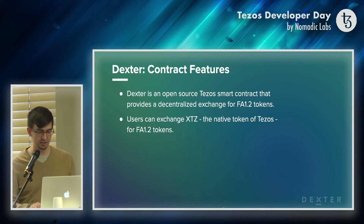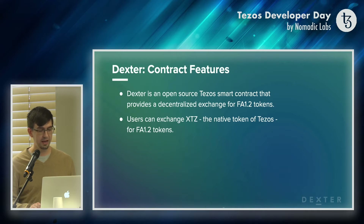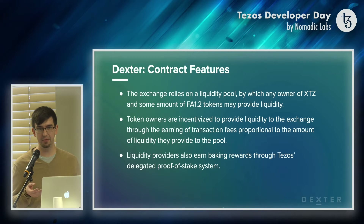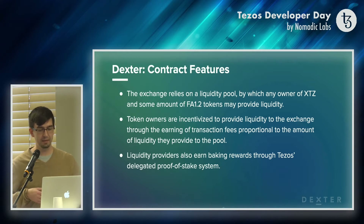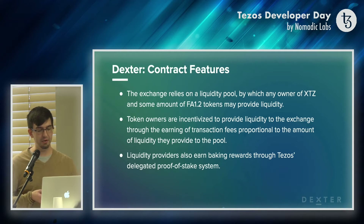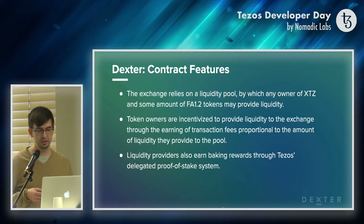So Dexter is actually two things: it's a contract and it's a web frontend. On the contract side, it's an open source Tezos smart contract that provides a decentralized exchange for FA1.2 tokens — you can exchange your XTZ for FA1.2. How do these XTZ and FA1.2 get there? We have to have pools of these things, which we call liquidity pools. Token owners are incentivized to put their XTZ and FA1.2 tokens in the exchange via transaction fees — each time someone goes to buy one of these tokens, the exchange will take a small transaction fee.